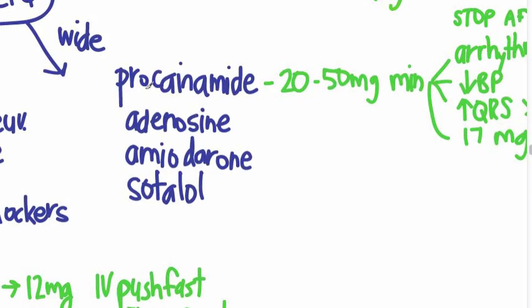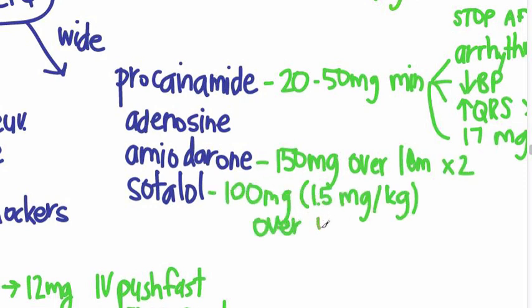Adenosine we've talked about already—remember we put this in that AV nodal blocker group. The only reason it's safe to do here is because it's so short-acting. These things do not block the AV node, and we'll see why that's important in the next video. The dose of amiodarone is 150 milligrams over 10 minutes, and you can repeat that. And sotalol is 100 milligrams over 5 minutes, but be careful because this can also increase the QT.